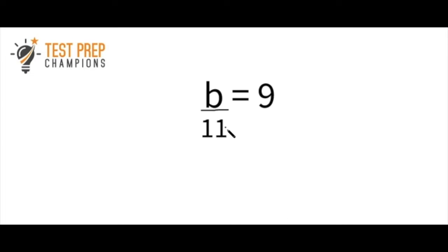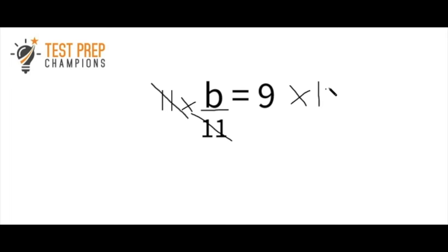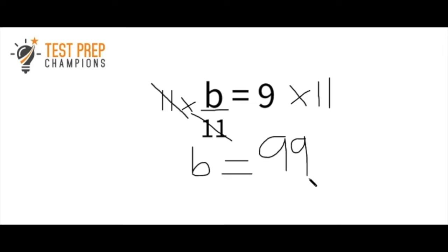The next question: b over 11 equals 9. Try to solve for b. Since it's b divided by 11, we have to do the opposite operation — the reciprocal or inverse. The opposite of division is multiplication, so we multiply by 11 on both sides. On the left, 11 divided by 11 cancels out, leaving b. And 9 times 11 is 99, so b equals 99.